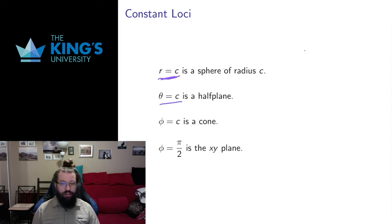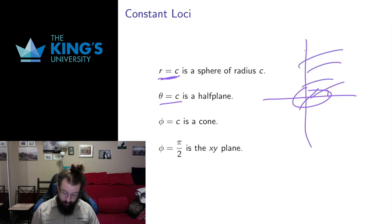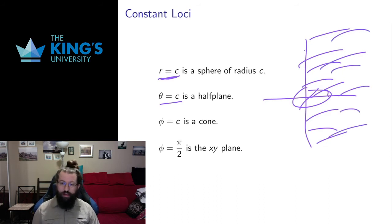Longitude equals a constant is exactly the same as the half planes that I had for cylindrical coordinates. So if the longitude equals a constant, the longitude is an angle in the xy plane. So if I fix an angle in the xy plane, then what I'm going to get is I'm going to get the half plane out from the z-axis of all points that have that longitude on a variety of spheres, on small spheres or large spheres.